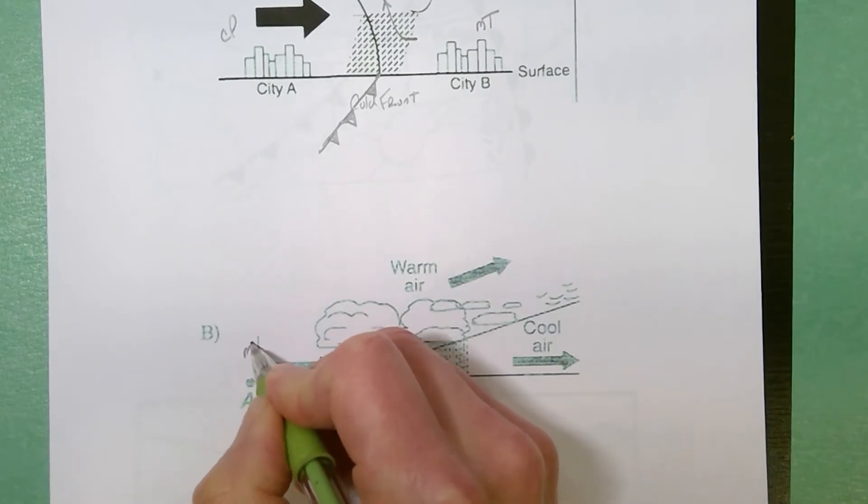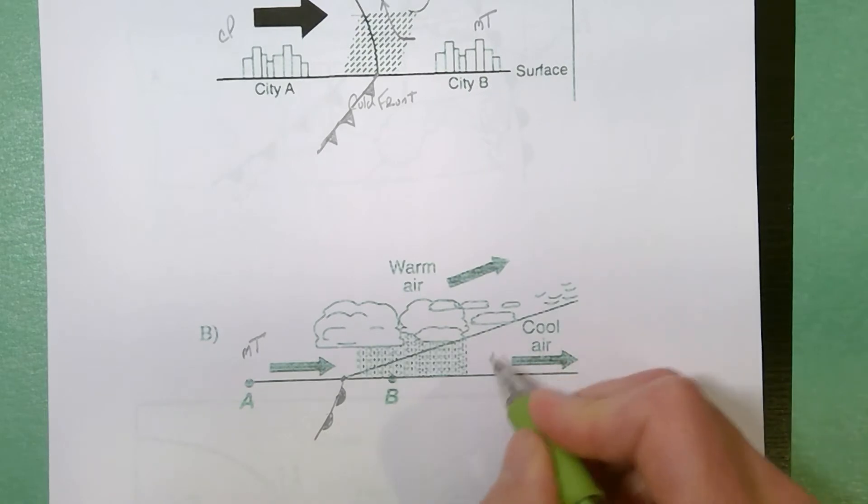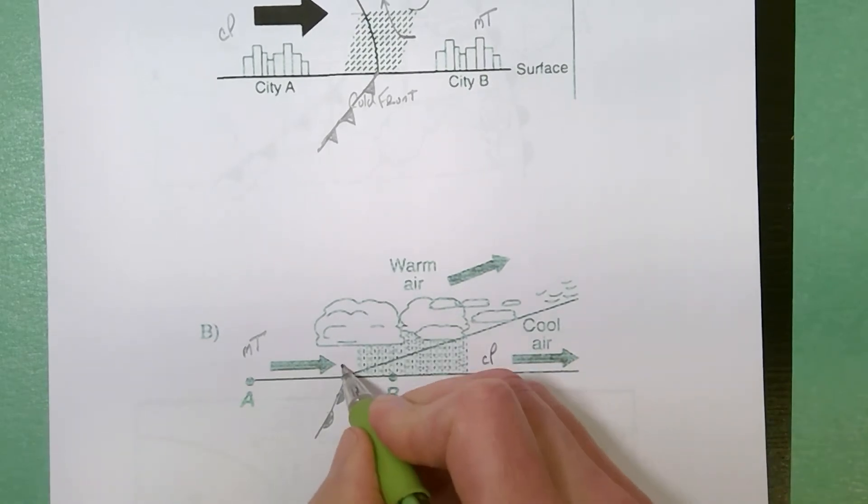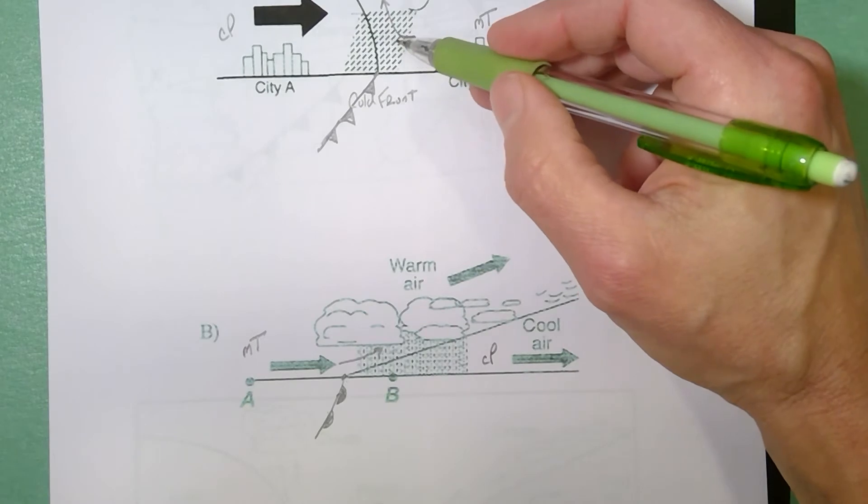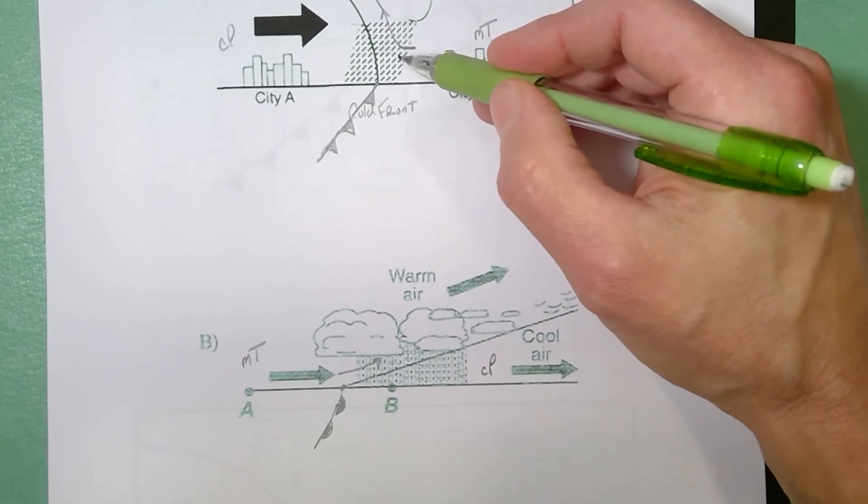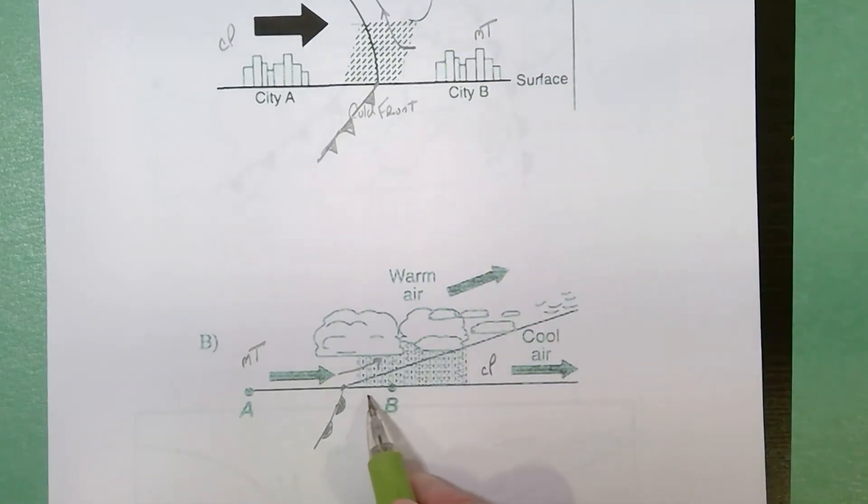This is your maritime tropical air mass. This is your continental polar air mass. It's always the warm air that rises. Now you'll see in this one at a warm front the rain goes ahead of the warm front. So you get short heavy rain at the cold front and you get sort of slow gentle precipitation preceding or ahead of your warm front.